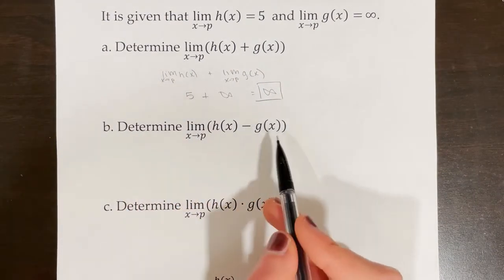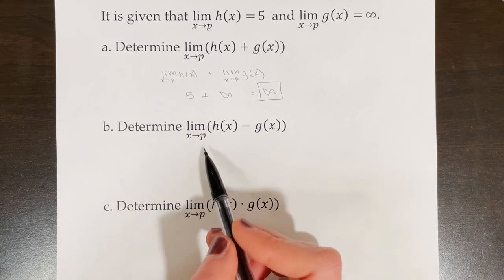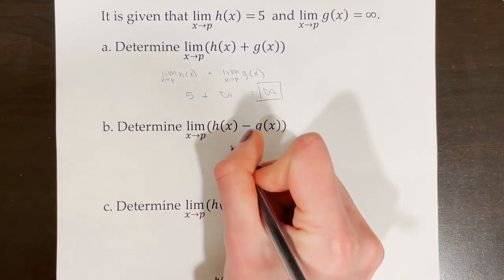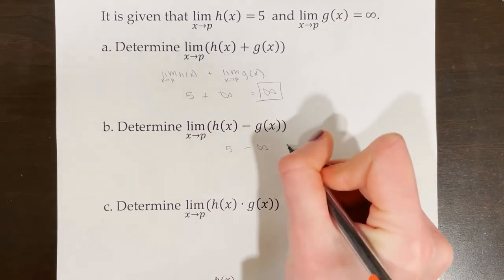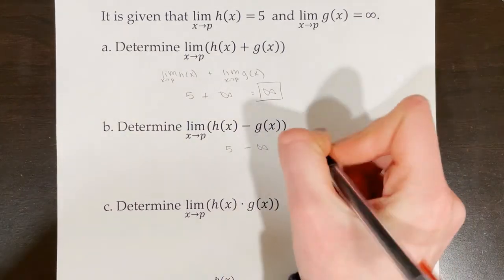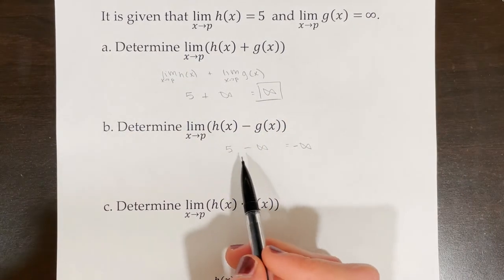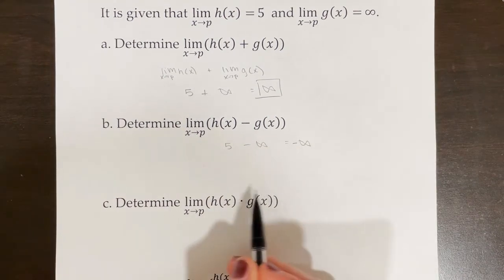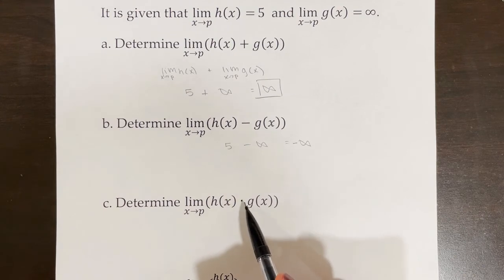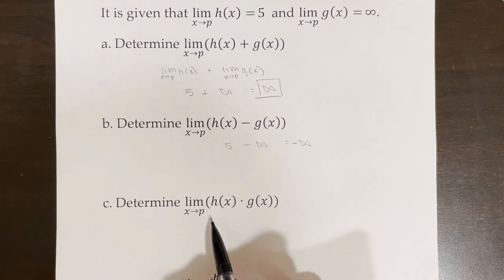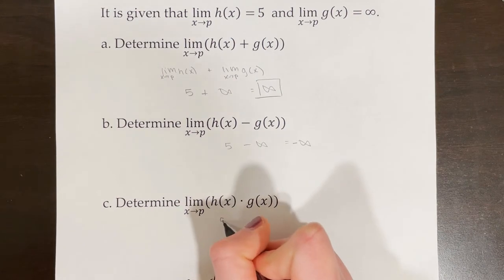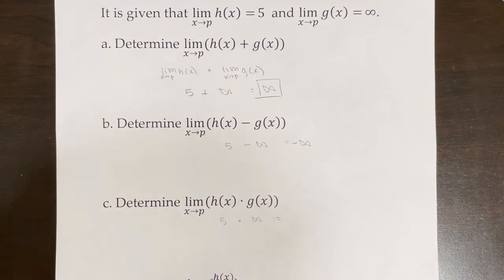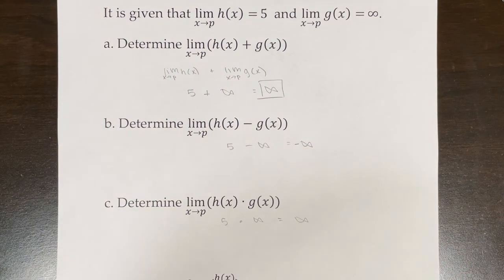For part (b), the limit involves subtraction: 5 − infinity = negative infinity, because adding 5 to an infinitely small (negative) quantity still results in negative infinity. For part (c), the limit involves multiplication: 5 times infinity is still infinity.